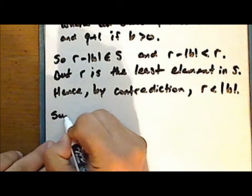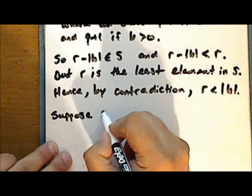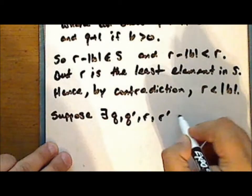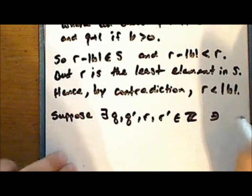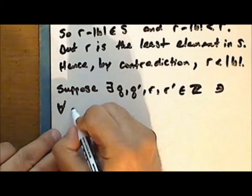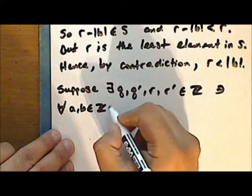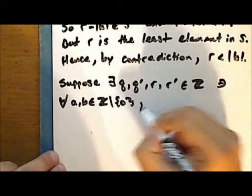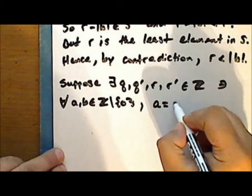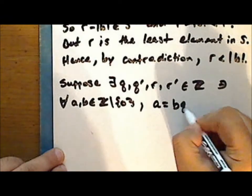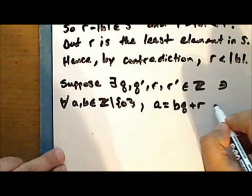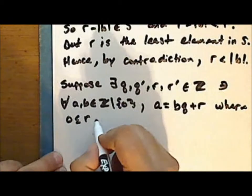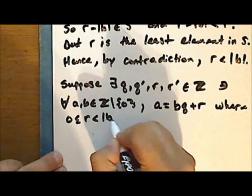Suppose that there exist integers q, q prime, r, and r prime, such that for every pair of non-zero integers we have that the number a can be represented as the product of b times q plus r, where r is greater than or equal to zero but strictly less than the absolute value of b.